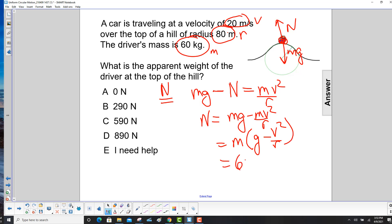Our mass is 60 kilograms. G is 9.8 minus, put another bracket there, V squared. So what do we have for V? That's 20 squared over R, which is 80. We carry out the math, and we get 288 newtons.